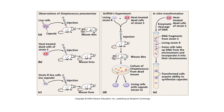This gave Griffith another idea for an experiment. What if he took the S strain but heat-killed them? Because capsules are mostly made of protein, by heating the bacteria he would actually destroy both the bacteria and the capsule.